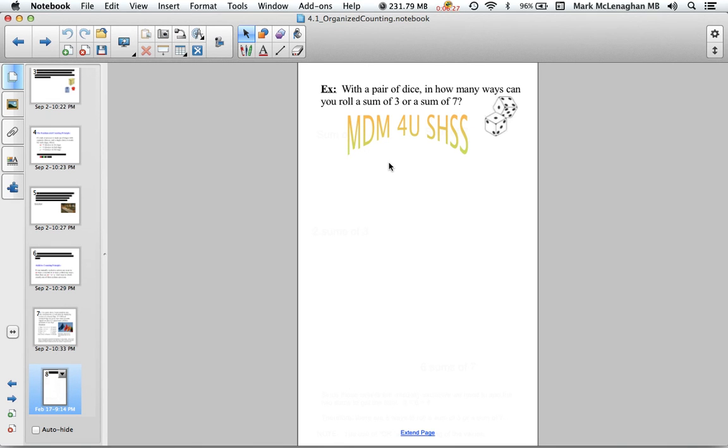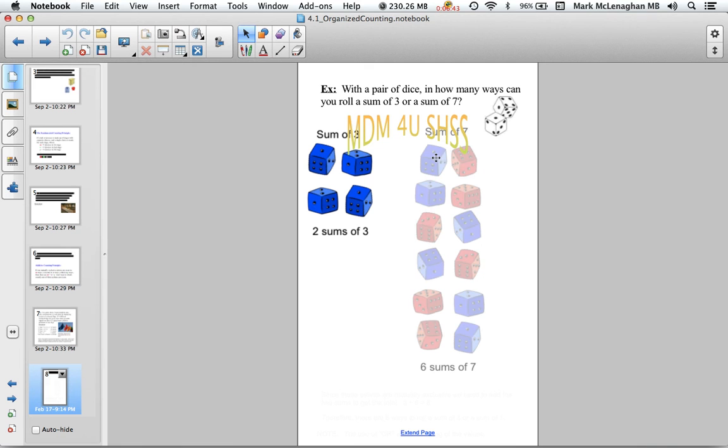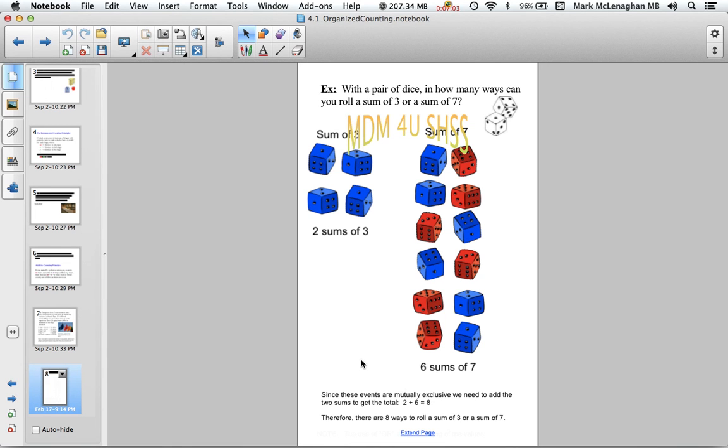We can also use that with a pair of dice. How many ways can you roll a sum of three or a sum of seven? For sums of three, we need one plus two or two and one, so there's two sums of three. For sums of seven, there's 1+6, 2+5, 3+4, 4+3, 5+2, and 6+1, so we have a total of six sums of seven. Since we can't have a sum of three and a sum of seven at the same time on the same pair of dice, they're mutually exclusive. We can just add them together: 2 + 6 = 8.